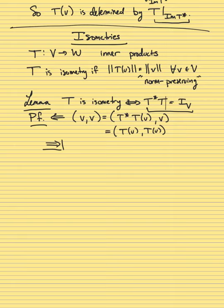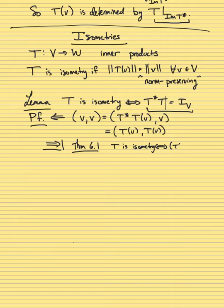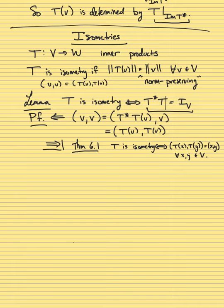This other direction is a little more involved — it's Theorem 6.1 in the book, and it's a pure computation, so I'd prefer you just read it. What it says is that T is an isometry if and only if it preserves the inner products: the inner product of T(x) with T(y) equals the inner product of x with y for all x, y in V. So being an isometry means the inner product of v with v equals the inner product of T(v) with T(v), and now you can choose two separate vectors.